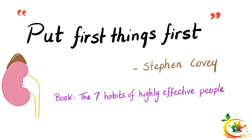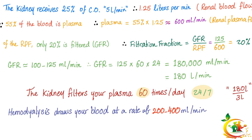In his book 'The Seven Habits of Highly Effective People,' Stephen Covey said successful people put first things first — and so does the kidney. Let's start with renal blood flow. The kidney receives 20–25% of cardiac output. Cardiac output is 5 liters per minute on average, so 25% is about 1.25 liters per minute.